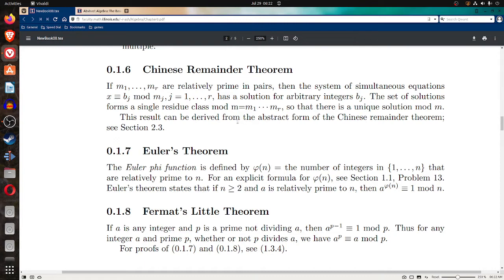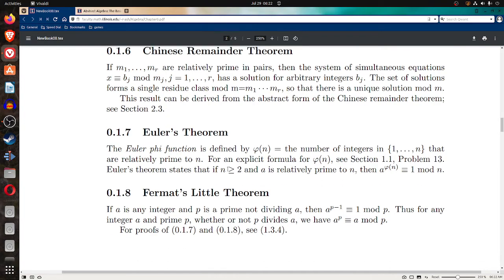The set of solutions forms a single residue class mod m equal to m1 times dot dot dot through m sub r, so that there is a unique solution mod m. This result can be derived from the abstract form of the Chinese Remainder Theorem, see section 2.3.